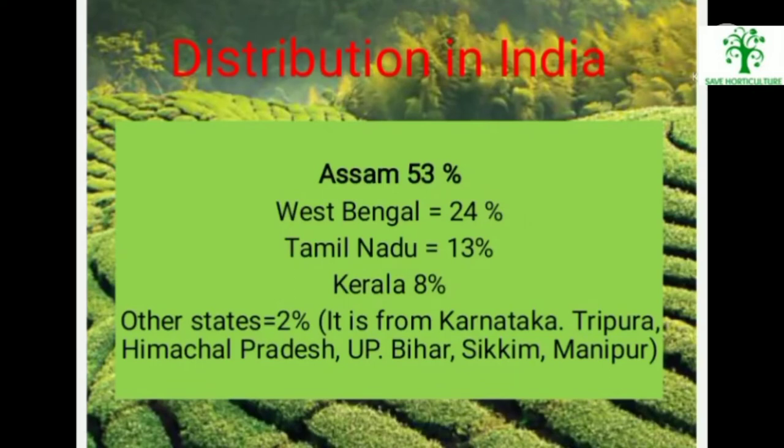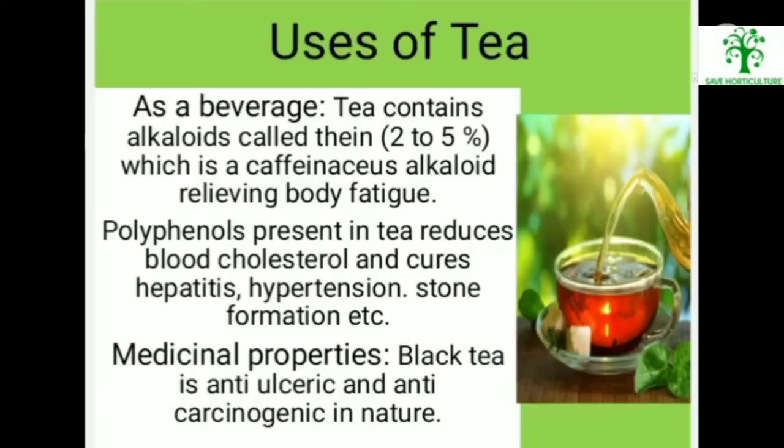Distribution in India. Assam: 53%. West Bengal: 24%. Tamil Nadu: 13%. Kerala: 8%. Other states: 2%, which includes Karnataka, Tripura, Himachal Pradesh, UP, Bihar, Sikkim, Manipur, etc.